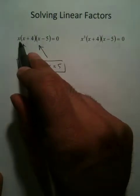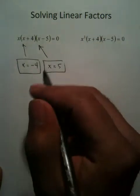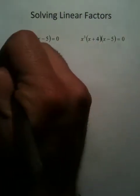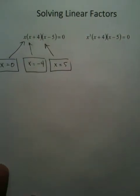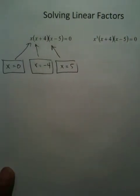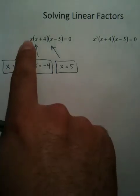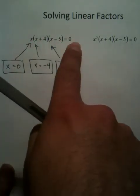But this x in the very front — you can't forget about it. People ask, what is it? Because x is all by itself, you get to say x equals 0. So that makes sense: 0 equals 0.